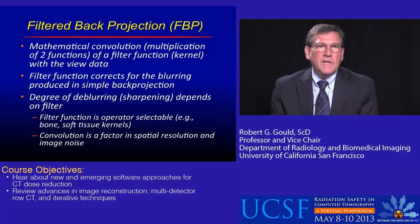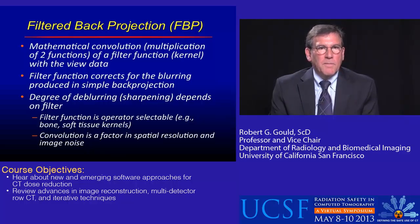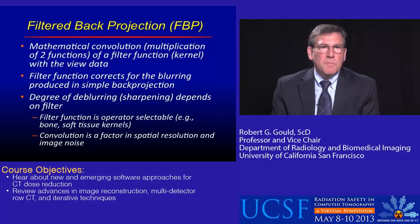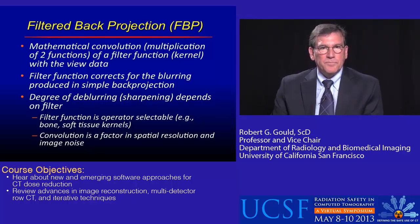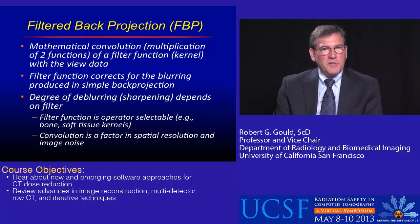That convolution uses a filter function — which we call the kernel — and the actual view data collected by the machine. The filter function is used to correct for blurring, which simple back projection introduces. The kernel is a variable: we can leave some of the blur in, meaning losing spatial resolution, but reducing noise.